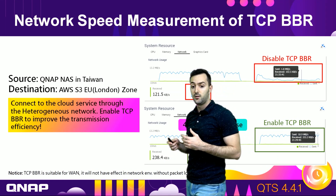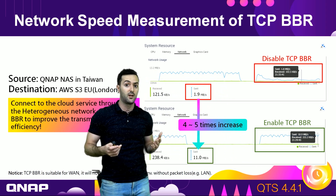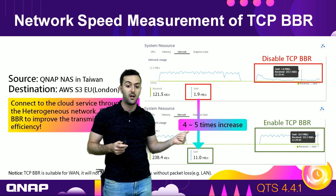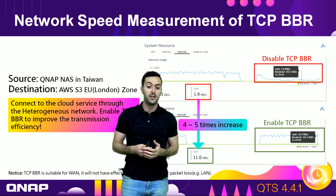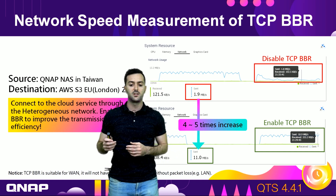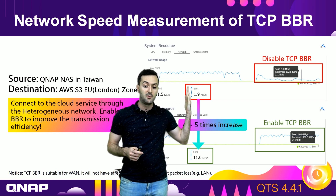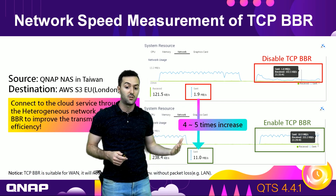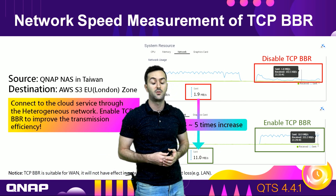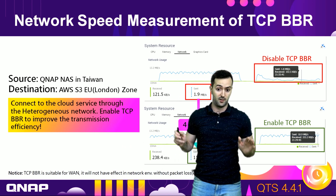Network speed using TCP BBR is much faster, especially when using a wide area network over greater distances. For example, with the NAS source in Taiwan using AWS S3 in the EU London zone, you can see improvements of four to five times. Disabled TCP BBR shows the baseline transfer rate, while enabling TCP BBR on Hybrid Backup Sync 3.0 delivers that four to five times speed increase.